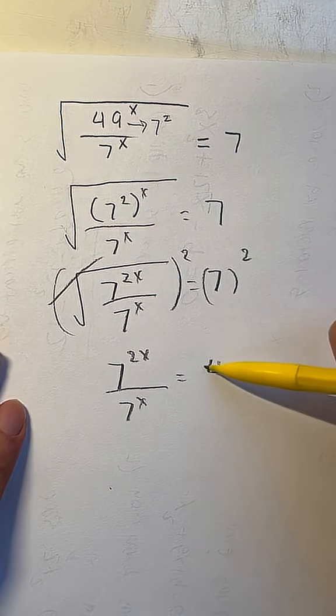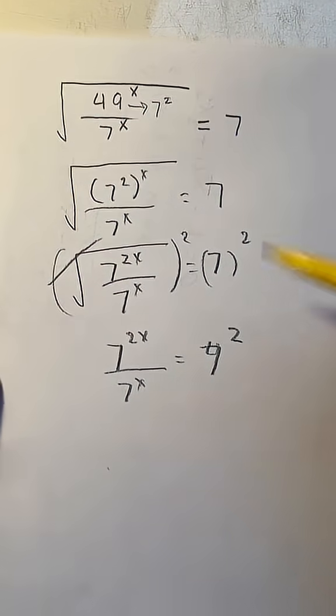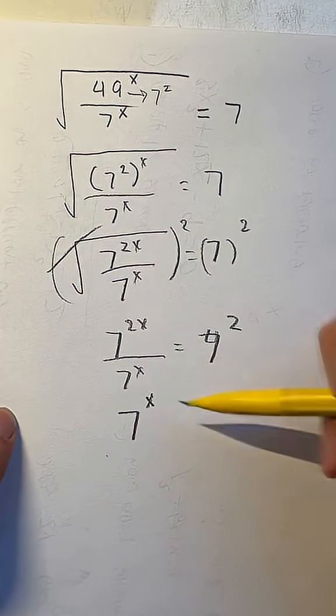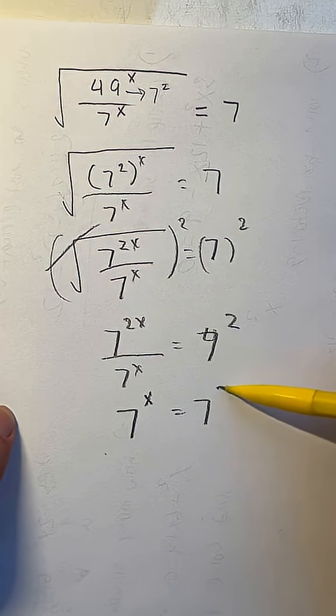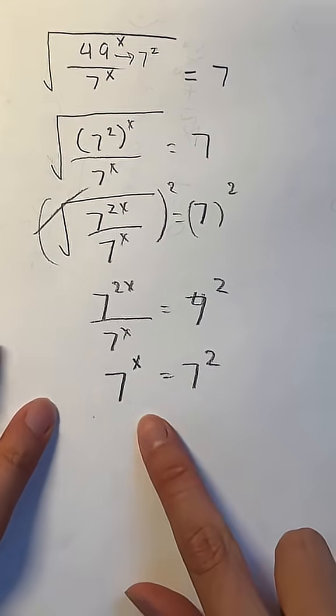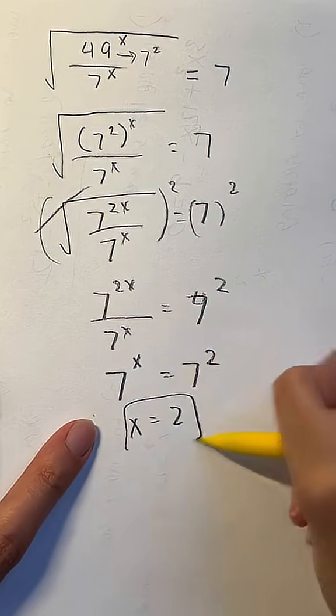Or I guess we don't have to do that yet. It's just going to be 7 squared. And whenever we divide powers with the same basis, we keep the base and subtract the exponents. 2x minus x is going to be x. So that equals 7 squared. And this is why I did not solve for it earlier. Because looking at these two, we can obviously tell that x is going to be equal to 2. And that is your answer.